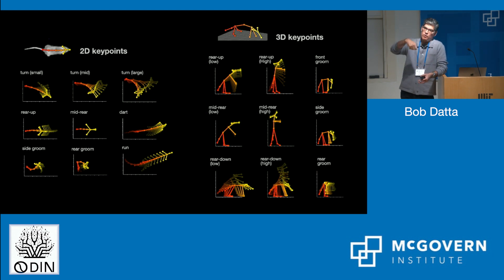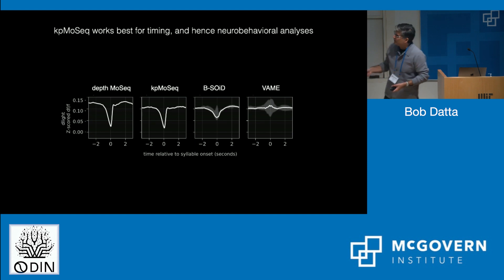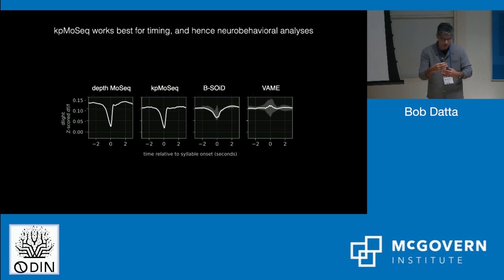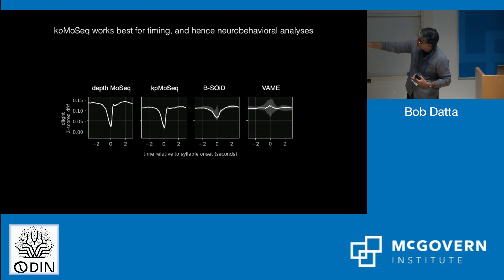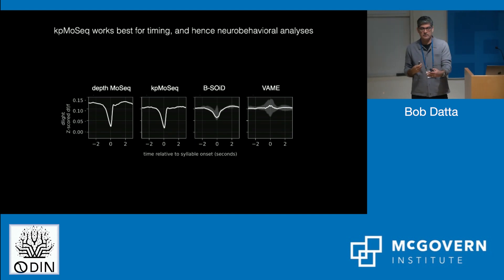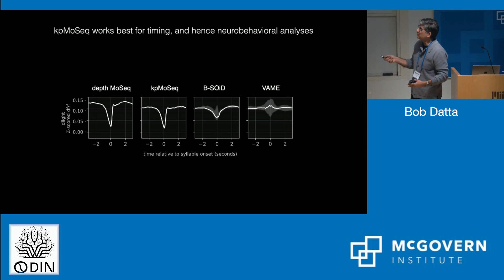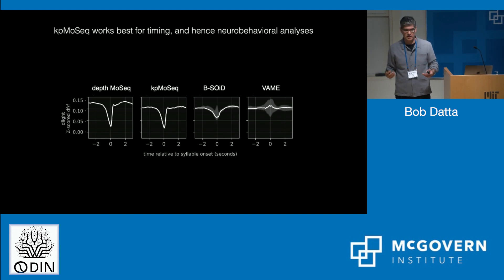This also allows us to compare the performance of MoSeq to other unsupervised methods for characterizing behavior. On the y-axis is time — time zero is the moment at which a mouse switches from expressing one syllable to the next — and the y-axis shows dopamine signal. There's this nice fluctuation in dopamine accompanying the transition from one behavioral syllable to the next, seen in 3D data from our depth cameras. If we use a single 2D camera from above, we recover exactly the same neurobehavioral relationship. But if we use other more clustering-type methods that don't really think about time in the same way MoSeq does, we lose this neurobehavioral relationship. That suggests that MoSeq is really useful if you want to think about how the brain actually generates spontaneous or natural behavior.